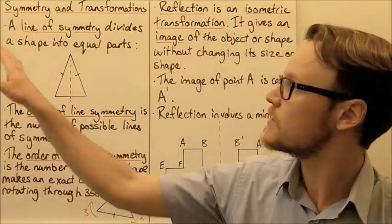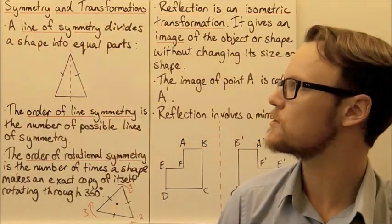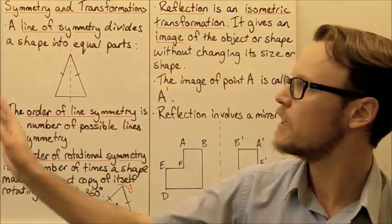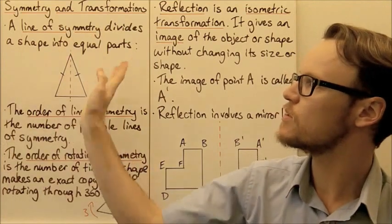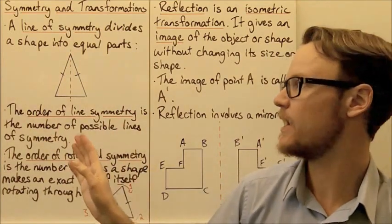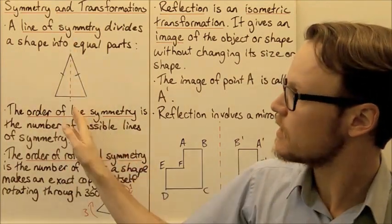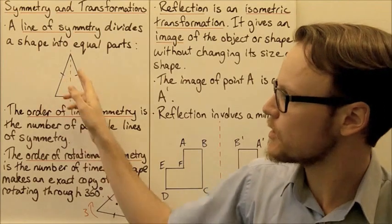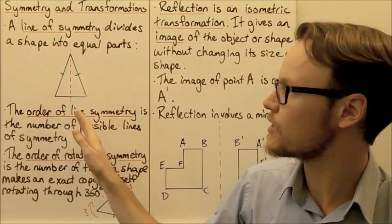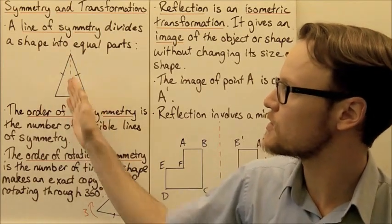Today we're going to look at symmetry and transformations. A line of symmetry divides a shape into equal parts. Here we have an isosceles triangle — it's the same on both sides.